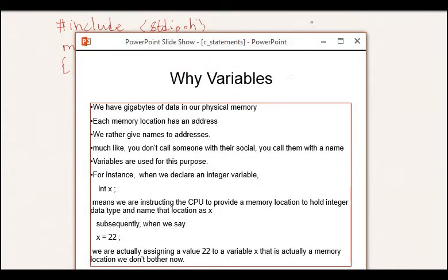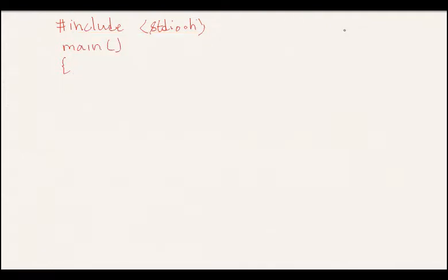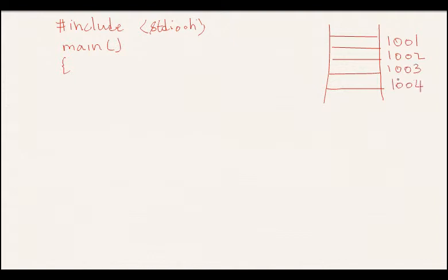Why do we need variables? Our system has a bunch of memory locations. Let's say these are the different memory locations and each one has an address. Let's pretend the address of this location is 1001, 1002, 1003, and 1004.